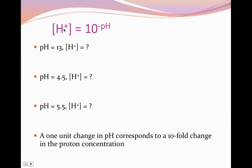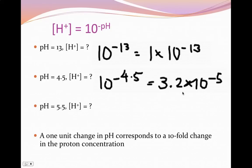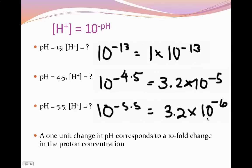We can also go backwards from pH to concentration. If pH = 13, then [H⁺] = 10⁻¹³ = 1×10⁻¹³. For pH = 4.5, [H⁺] = 10⁻⁴·⁵ = 3.2×10⁻⁵. And for pH = 5.5, [H⁺] = 10⁻⁵·⁵ = 3.2×10⁻⁶. Notice that going up by one pH unit — from 4.5 to 5.5 — represents a tenfold change in proton concentration, from 10⁻⁵ to 10⁻⁶.